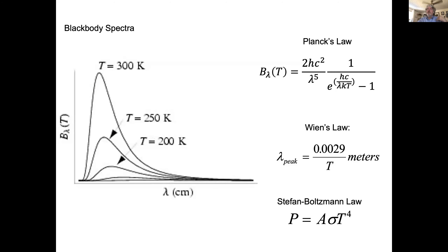What do you see from a continuous source — a hot, dense object with some thermal energy above zero Kelvin? We talk about the light from those as black body radiation. If you plotted wavelength versus how much light you're getting from, say, an object in your room at roughly 300 Kelvin, you'd see a continuous distribution with a peak somewhere in the infrared and hardly any light at short wavelengths.